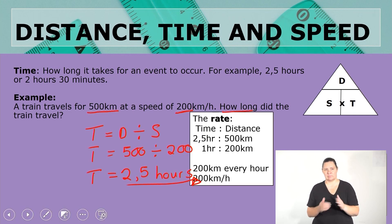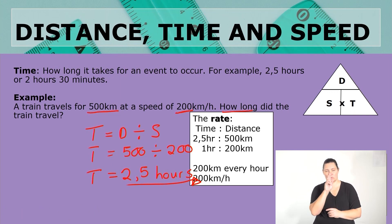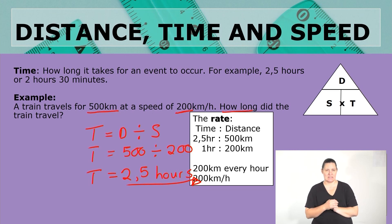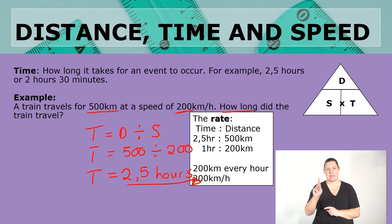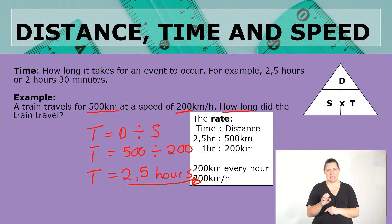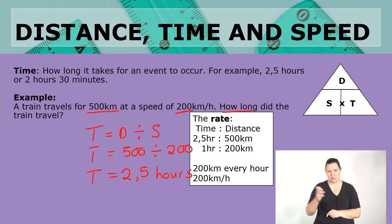Let's move on to the next one. When we are looking at two and a half hours, what is the rate for this whole question? Time is to distance — that's two and a half hours is to 500 kilometers. When we simplify that, it gives us one hour is to 200 kilometers. That was the rate: 200 kilometers every hour, that is 200 kilometers per hour.